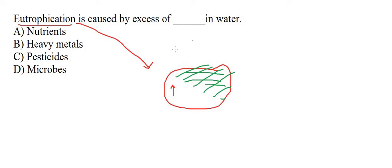जिसके अंदर नाइट्रेट या फिर फॉस्फेट की quantity ज़्यादा होती है, ऐसा कुछ भी discharge किया जाए तो वो eutrophication cause करता है। तो इसका जो answer है — water के अंदर nutrients ज़्यादा होते हैं जिसकी वजह से eutrophication होती है। तो option का right answer nutrients होगा।